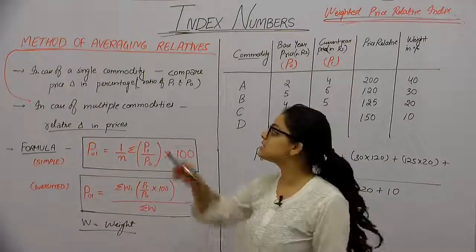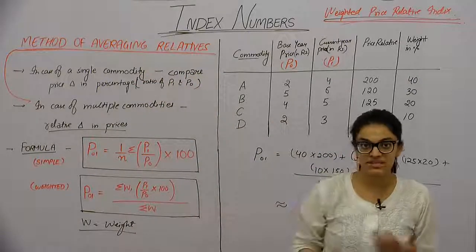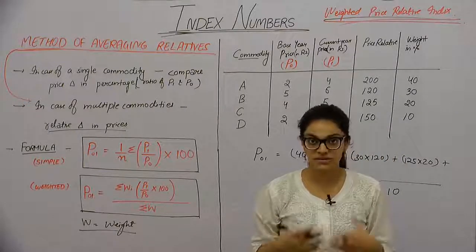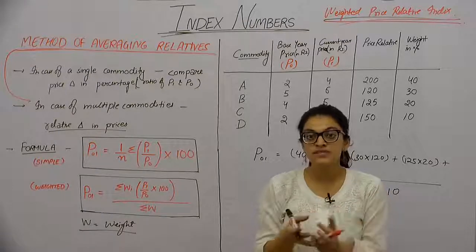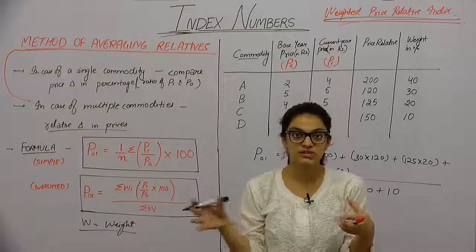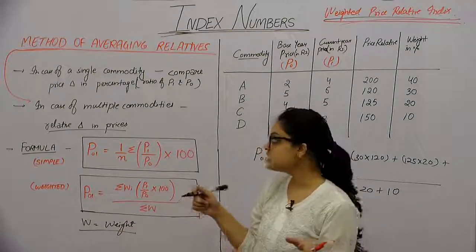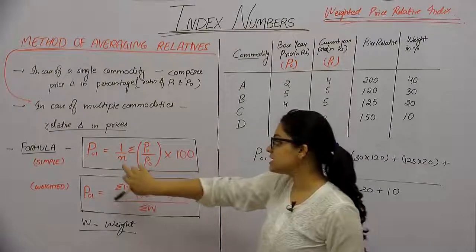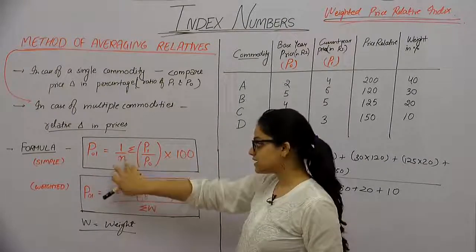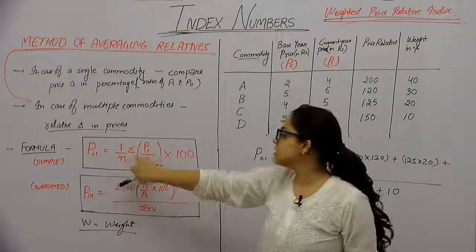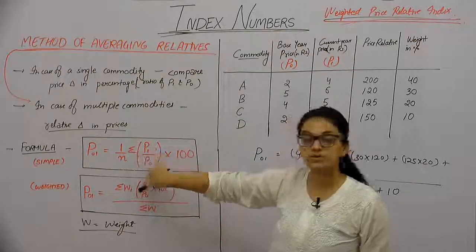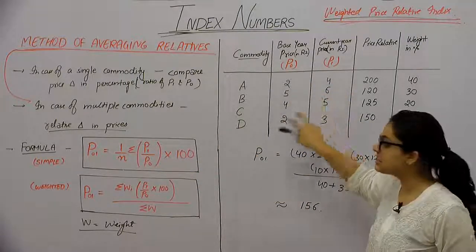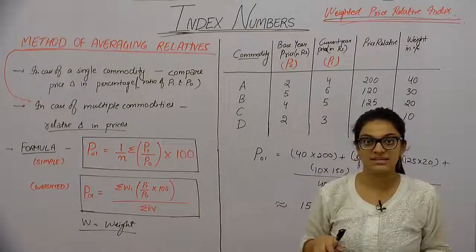To summarize the method of averaging relatives: we take the prices of the base year and current year, find their ratio, and look at the price index relative to different commodities. For the simple index, the formula is: P01 equals 1 upon N — where N is the number of commodities — into summation of P1 upon P0 into 100. That is, take the ratio of current price to base price, multiply by 100, and add them up.